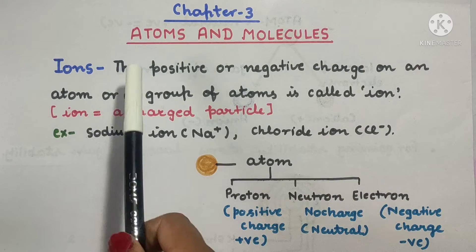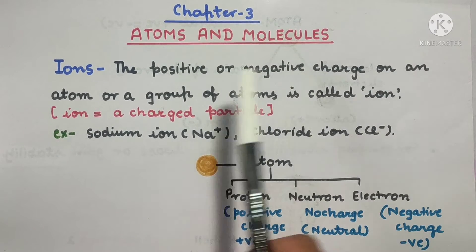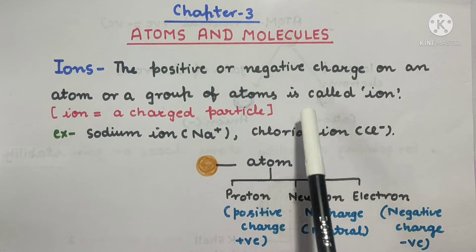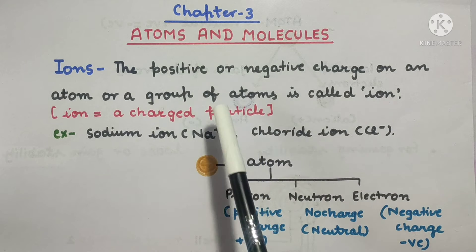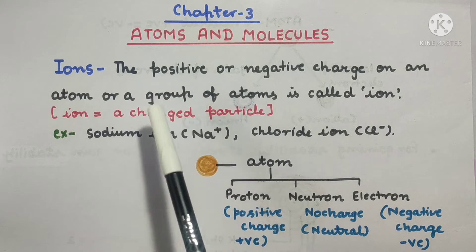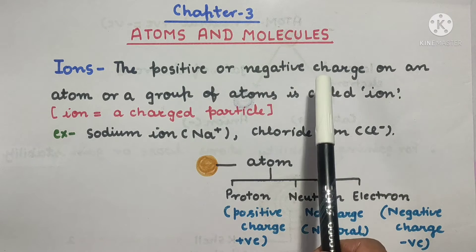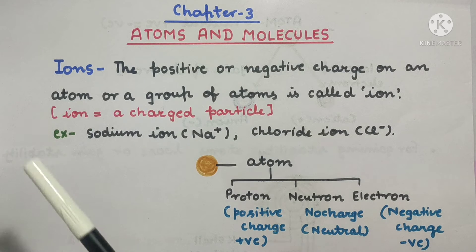So, what are ions? The positive or negative charge on an atom or a group of atoms is called an ion. An atom or group of atoms carrying a positive or negative charge is called an ion.